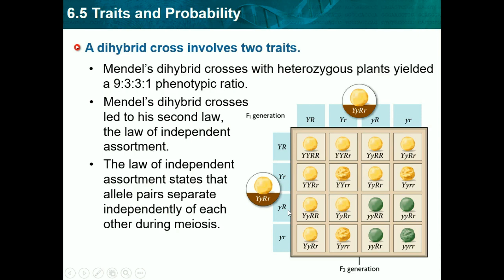Heredity patterns can be calculated with probability. Probability is the likelihood that something will happen. Probability predicts the average number of occurrences, not an exact number — the Punnett square is basically probability. Probability equals the number of ways a specific event can occur over the number of total possible outcomes. Probability applies to random events such as meiosis and fertilization. This is just a simple example of probability using a coin.